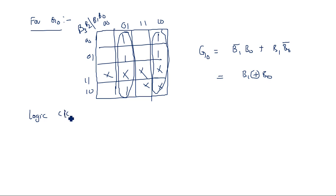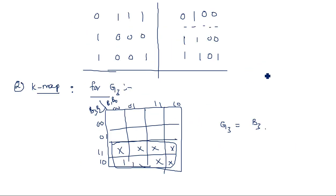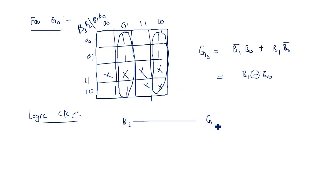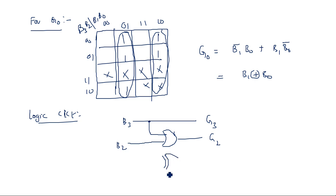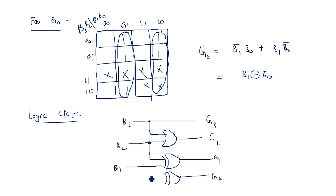The logic circuit diagram: g3 is simply b3 taken directly. g2 is an OR gate between b3 and b2. g1 is an XOR gate between b2 and b1. g0 is an XOR gate between b1 and b0. This is the logic circuit for the conversion of BCD to Gray code. Thank you.